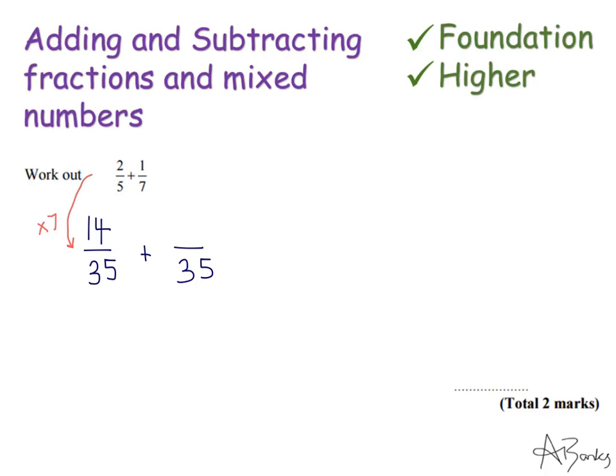And with my second fraction, to get from 7 to 35, I'm timesing by 5, so I'm going to have to do the same to my numerator. So 1 times 5 is 5. So 1 seventh is equivalent to 5 over 35.